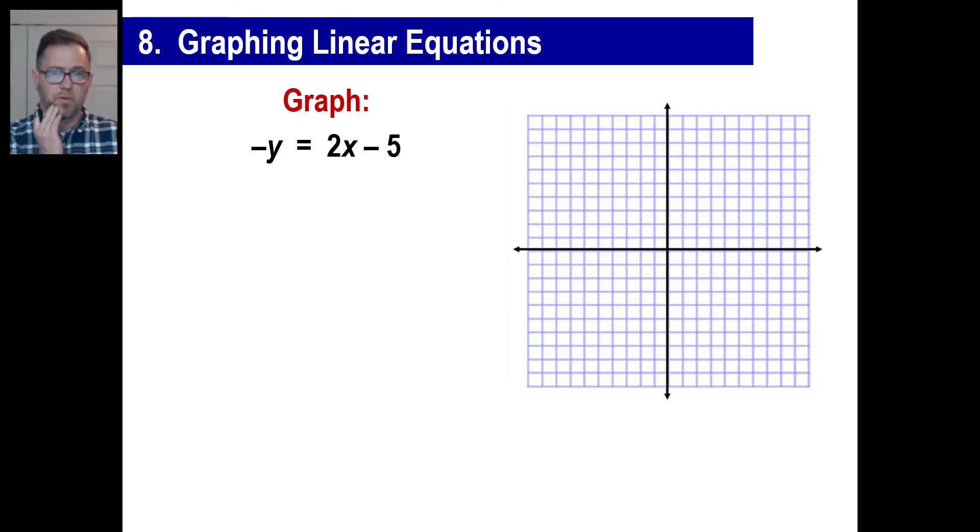Now this is kind of wonky. What in the world? That negative y looks ugly, doesn't it? Okay? We're going to have to, in other words, this is the same thing as negative one y. We don't want no negative one y. We want a positive one. So we're going to have to divide by negative one by negative one by negative one. Y is equal to negative two over one x. Negative five divided by negative one is positive five. So immediately you can visualize the positive five tells you 1, 2, 3, 4, 5. There we go.